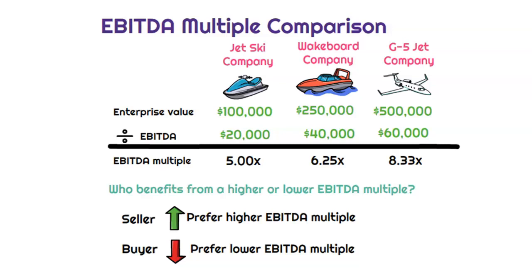The next thing to touch on is who benefits from a higher or lower EBITDA multiple. If you're a seller, you want that multiple to be as high as possible, because that means the enterprise value you're trying to sell your business for is much higher as a multiple than the current EBITDA your business is generating. On the flip side, if you're a buyer, you want as low a multiple as possible, because a higher multiple means you're paying more for the earnings power, while a lower multiple means you're getting a discount compared to what else is going on in that industry. From the seller's perspective, they'll compare the EBITDA multiple to recent transactions and may price above if they're bullish. If you're a buyer, you always want to be below EBITDA multiples from recent transactions and get it as low as possible.